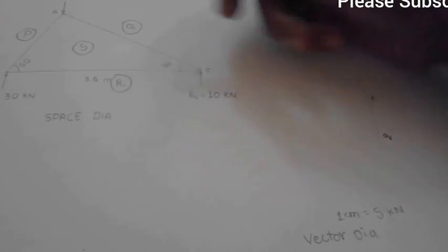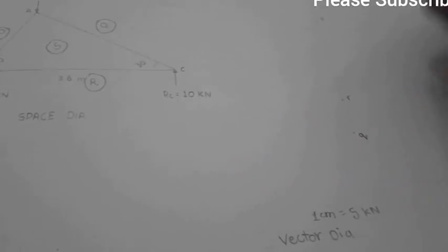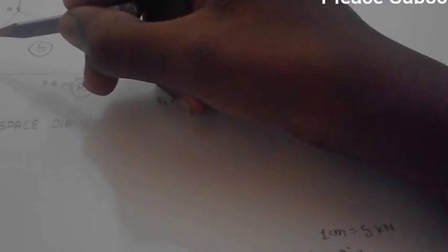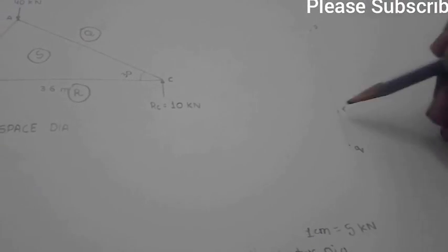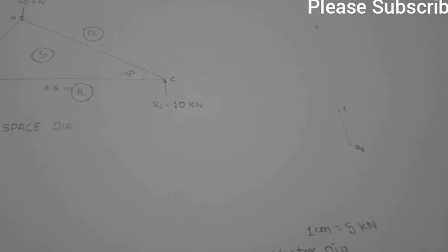Now R to S is 30 kilonewtons divided by 5, which equals 6 centimeters. Thus PQ, QR, and R to P are drawn.